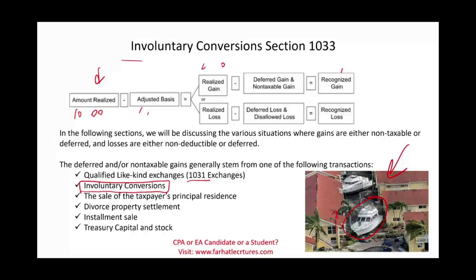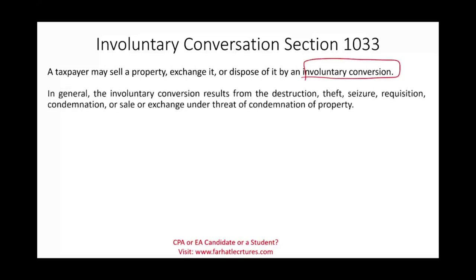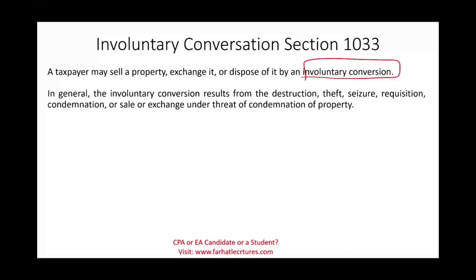A taxpayer may sell, exchange, or dispose of property in an involuntary conversion. Examples of involuntary conversion include: destruction, theft, seizures, requisition, condemnation, and sale or exchange under the threat of condemnation. Simply put, the taxpayer did not choose this — something was forced on that taxpayer.